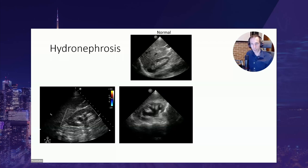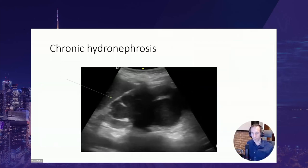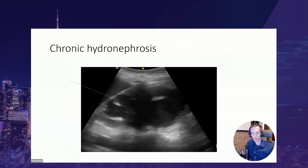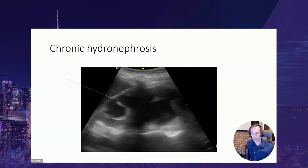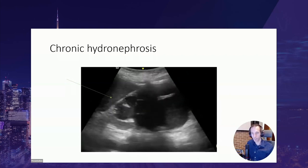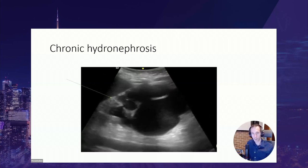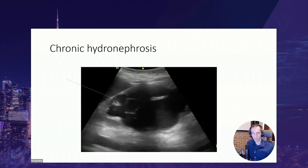Severe hydronephrosis shows ballooning of the minor calyces. When hydronephrosis is chronic and prolonged, the collecting structures are dilated but the cortex becomes very thin, indicating atrophy of the renal parenchyma. This can appear as an unexpected finding in patients with minimal urinary symptoms presenting with kidney failure.